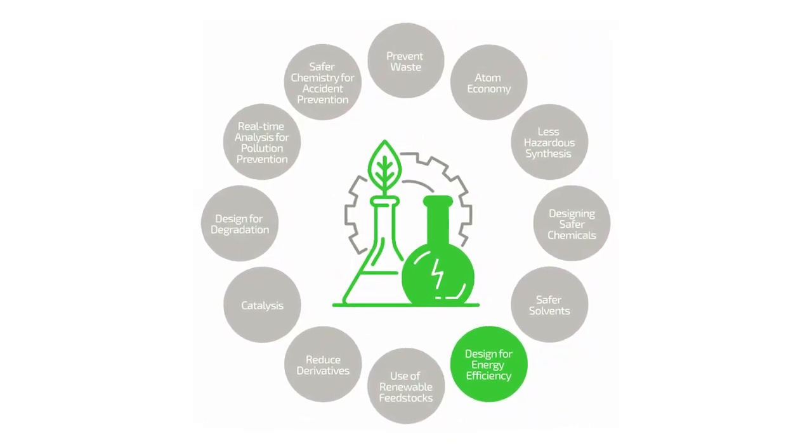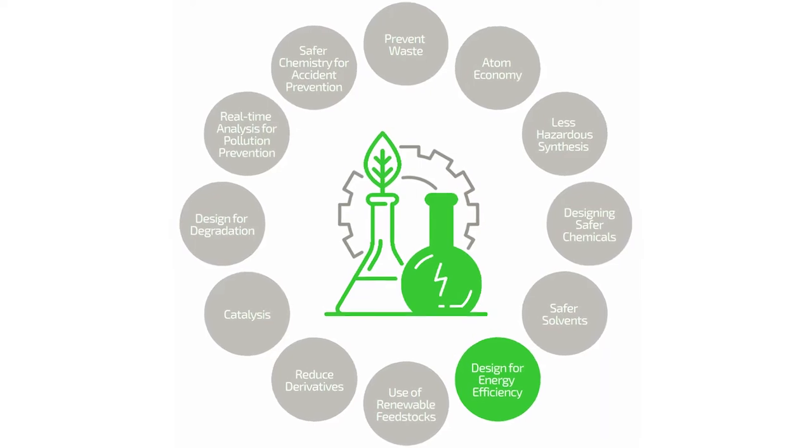As a last example, I would like to introduce principle number six: design for energy efficiency. Energy is a key issue in the 21st century, and we as a society aim to reduce our energy demands wherever possible. Working in the lab also often requires a lot of energy, because reactions need heating or cooling or the use of energy-intensive machines. Therefore, chemists really have to take care when planning their reaction sequences.